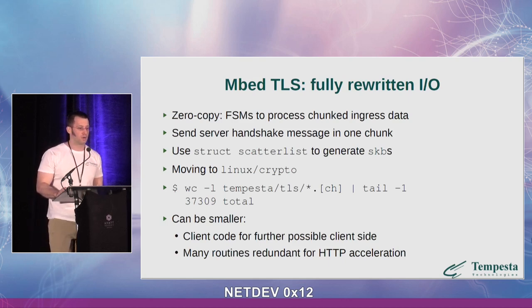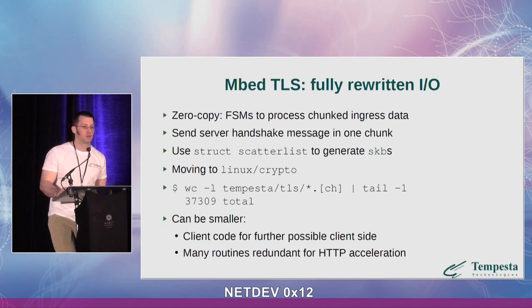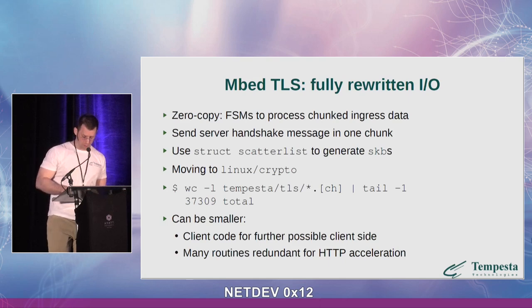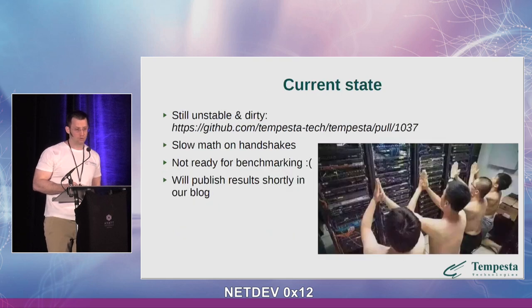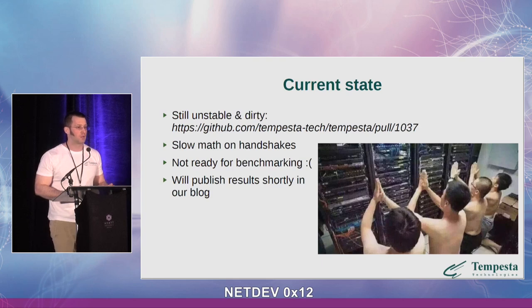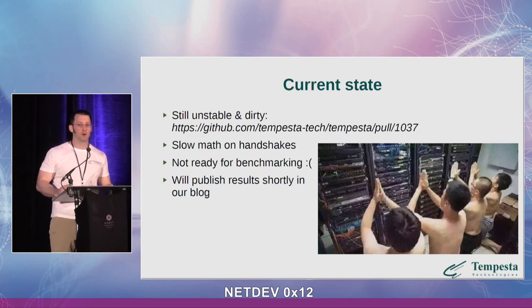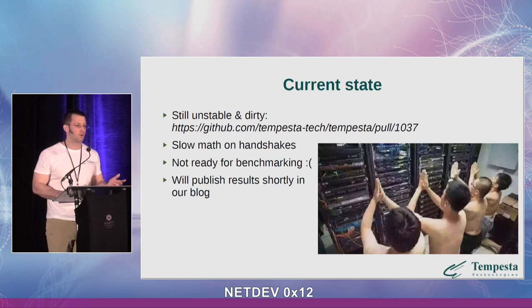In general, in Tempest TLS we had to almost fully rewrite MbTLS input-output to provide optimized data processing, merged with Linux-native scatter-list and the crypto API. The current code size is less than 40,000 lines, and it can be shrunk further — we still haven't evicted the client-side code, DTLS, and other parts. Unfortunately the code is still in experimental state, so you can find it in our pull request. We didn't have time to provide benchmarks before the conference, but we'll provide performance results shortly after in our blog or in an updated version of the paper.